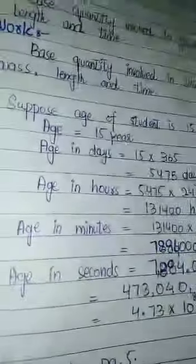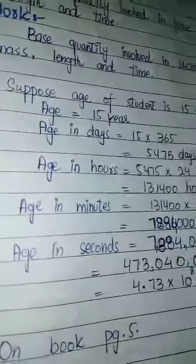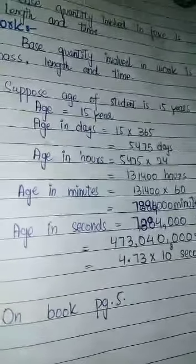Now we have question number 4: estimate your age in seconds. Students, you always remember one thing - we have the age in years. Now for example, you have a student who has the age of 15 years. Now from 15 years we move to seconds. The smallest unit is second.